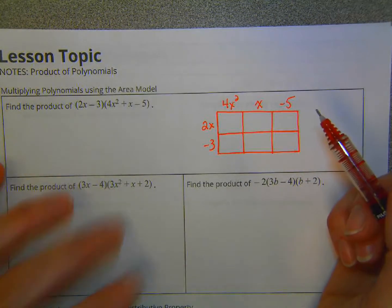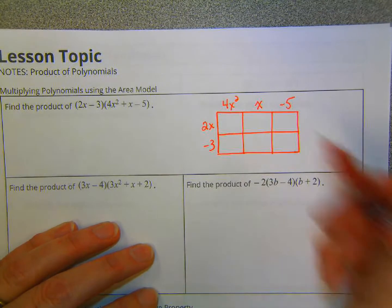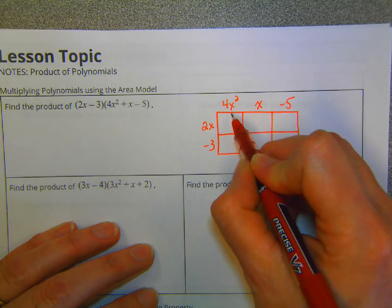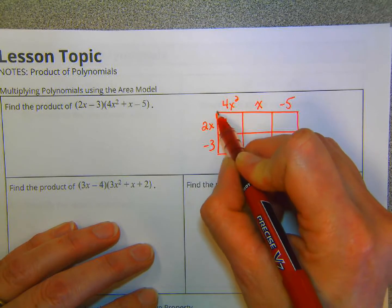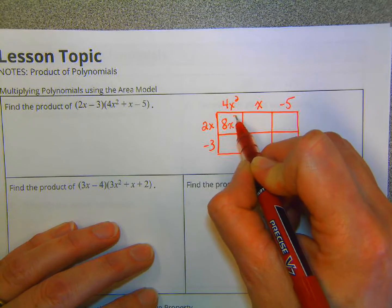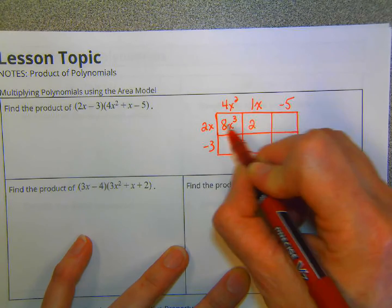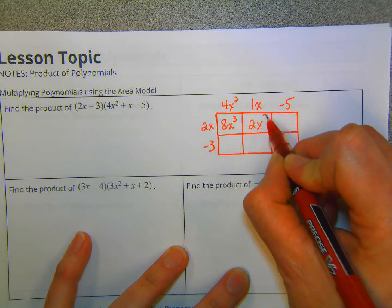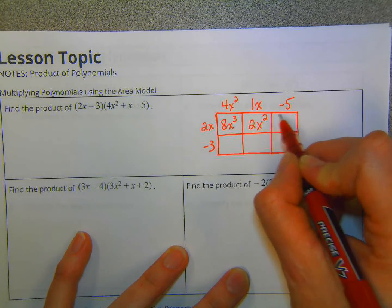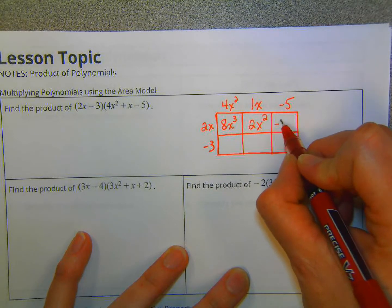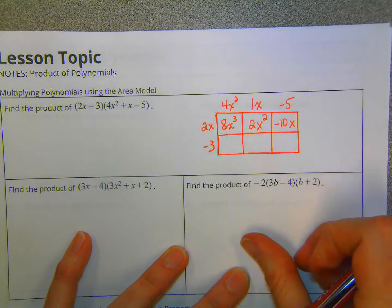And now what we want to do is find the area of each one of these boxes inside this big rectangle. So for this one right here, we want to do 2x times 4x. 2 times 4 is 8. x times x squared is x cubed. For this one, remember there's a 1 right here. 2 times 1 is 2. x times x is x squared. And then this last one, it's 2x times negative 5. So that's 2 times negative 5 is negative 10. And then x, there's no x here, so we just have that x left over.